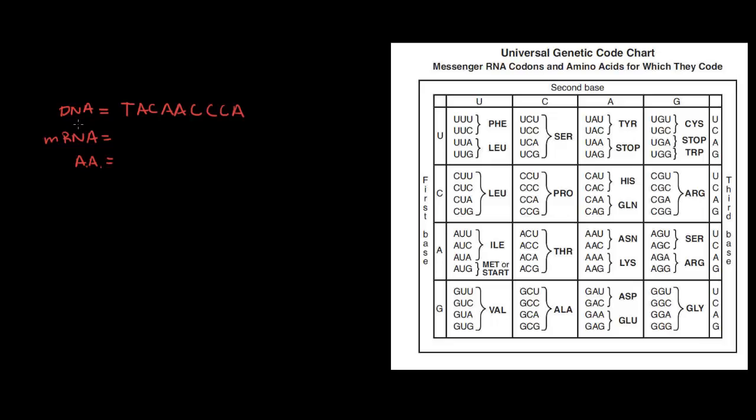One of the biggest mistakes my students make is they are given a DNA sequence and they try to use that in the universal genetic code chart. They can't find a T anywhere in here and they give up. So make sure that you know this chart is for mRNA. When given DNA, you have to do an intermediate step before you can look it up in the chart. Let's do that.